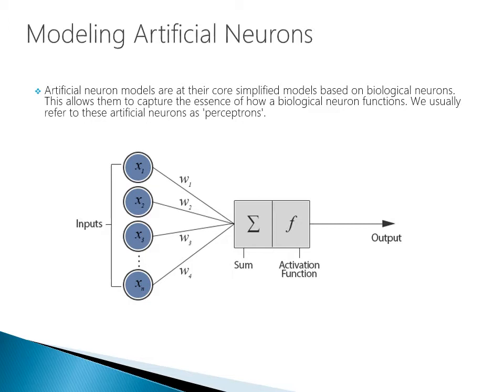We usually refer to these artificial neurons as perceptrons. The basic idea is that we have a series of inputs — just variables from our data set — which we can think of as neurons. These inputs go through and they're weighted in some way. The summation of the weights of these inputs are summed, and then there's an activation function that triggers whether or not the neuron should fire. If it should fire yes or no, it creates a certain output. In the crudest sense, this is what an artificial neural network is actually doing.